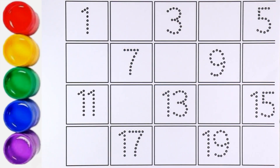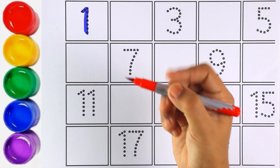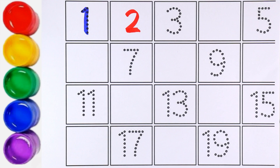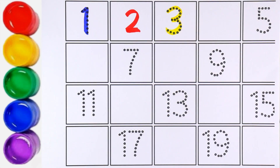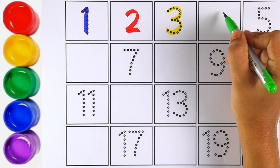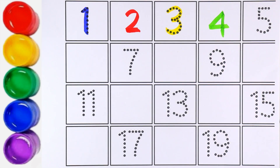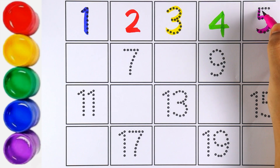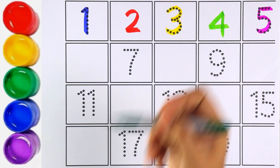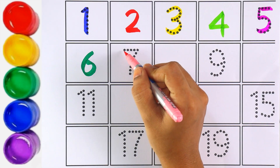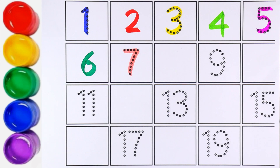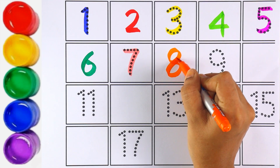Now let's start writing numbers. Blue color: number one. Red color: number two. Yellow color: number three. Green color: number four. Pink color: number five. Green color: number six. Light pink color: number seven. Orange color: number eight.